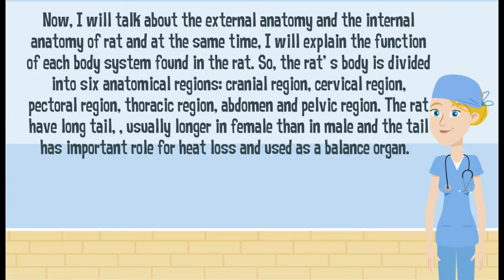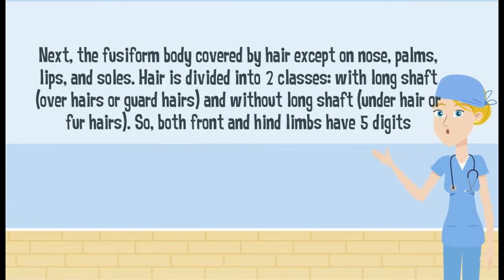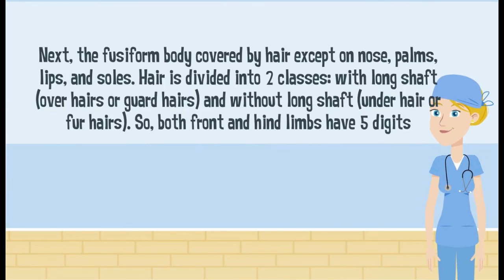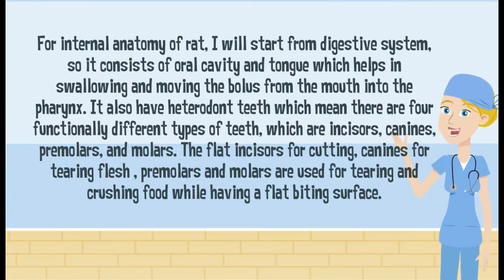The fusiform body is covered by hair except on the nose, palms, and lips. The head has hair divided into two classes: with long shaft and without long shaft. Both front and hind limbs have five digits each.